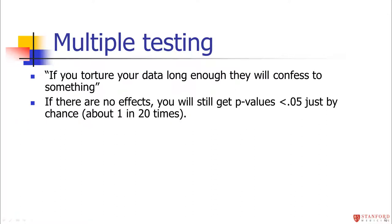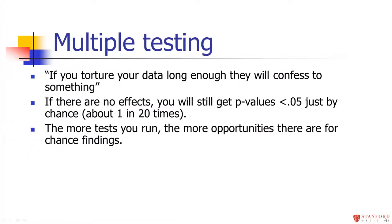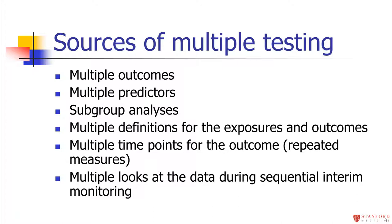If there are no effects, you should expect to get a p-value of less than 0.05 about 1 in 20 times. That significance level guarantees a type one error rate of about 5% — 1 in 20 times you're going to get a false positive. If you run lots of tests, you're going to have more opportunities for chance findings.